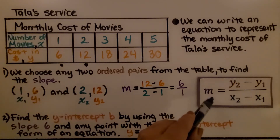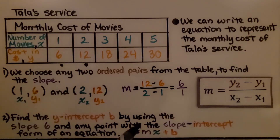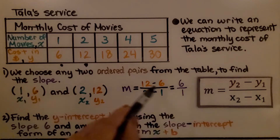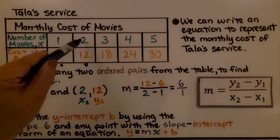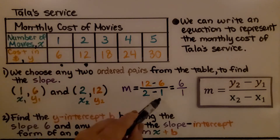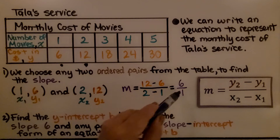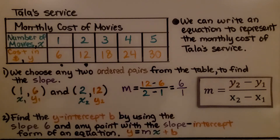We use the slope formula and do 12 minus 6 over 2 minus 1. We get 6 over 1, so the slope is 6.